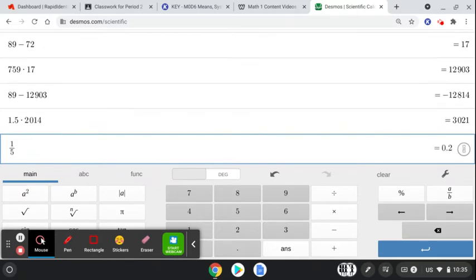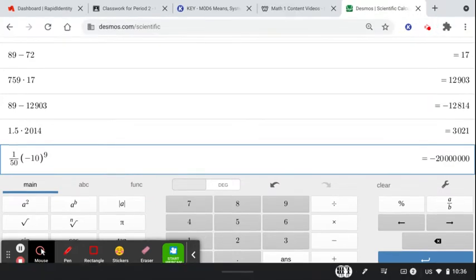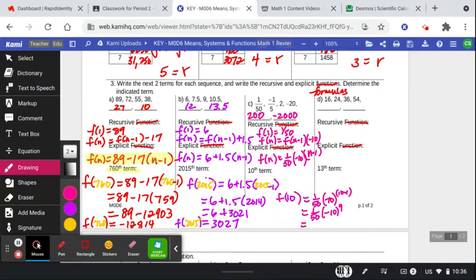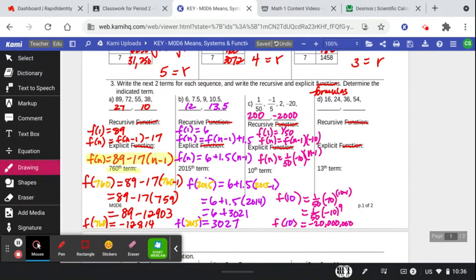1 divided by 50, do you see how that gives me the fraction? Times negative 10. And then right here, there's this little tiny a to the power of b button that we use to get us to that exponent of 9. Negative 20, 1, 2, 3, 4, 5, 6, 7 zeros. Now remember we knew that with every step it was just adding a zero, so that makes sense. I notice it's got a negative. So there's 1, 2, 3, 4, 5, 6, 7. So that looks like 20 billion. That's our f of 10.